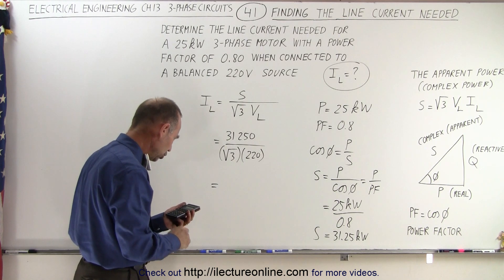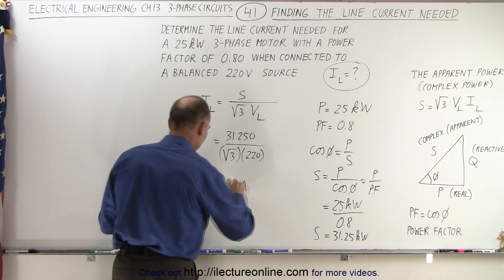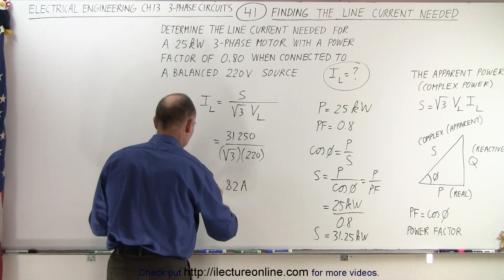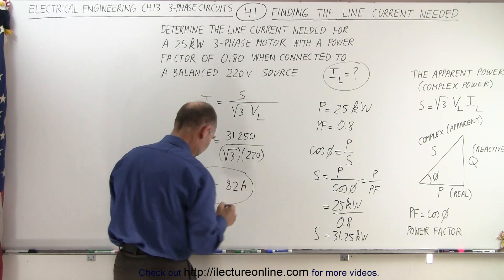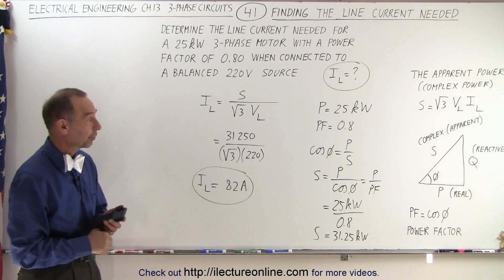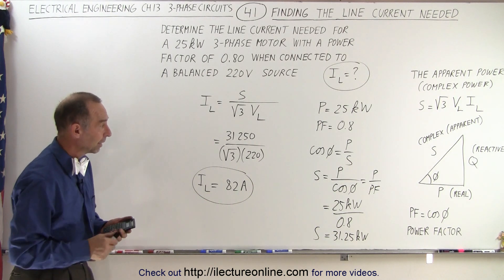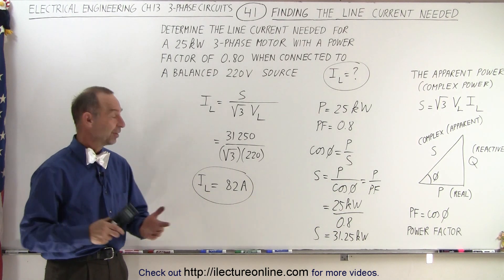A current of 82 amps will be required along the line in order to provide that motor with sufficient current and power to operate. And that is how it's done.